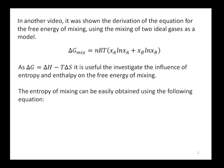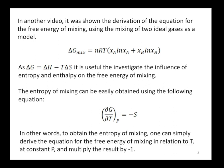The entropy of mixing can be easily obtained using the following equation, which is a very important equation in thermodynamics: (∂G/∂T) at constant pressure equals minus S. This equation comes from the combination of first and second laws of thermodynamics. In other words, to obtain the entropy of mixing, one can simply derive the equation for the free energy of mixing in relation to T at constant P and multiply the result by minus 1.